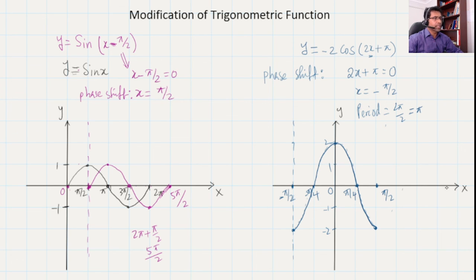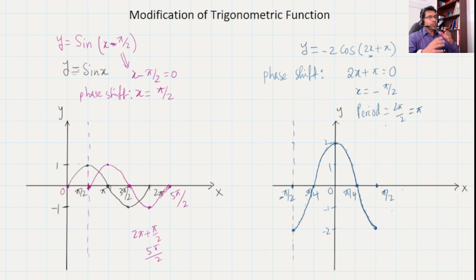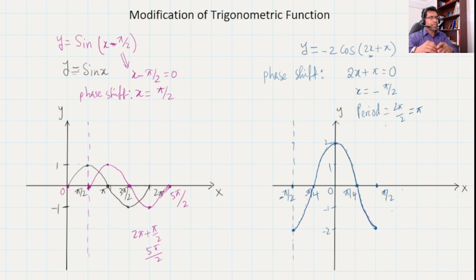The graph continues like that, but make sure our period will always be π — for a complete circle it is just π, not 2π. So here we can see the period change along with the phase shift. In the previous example we only changed the phase shift but not the period. Thanks for watching — if you'd like to see more videos, please subscribe to my channel.